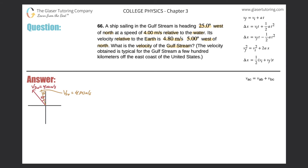What we're asked to find is the velocity of the Gulf Stream, which I'll label as the water — specifically, the velocity of the water relative to the earth. Now, considering the relative velocity formula: the velocity of one item relative to a second item equals the velocity of the first item relative to a third item, plus the velocity of that third item relative to the second.